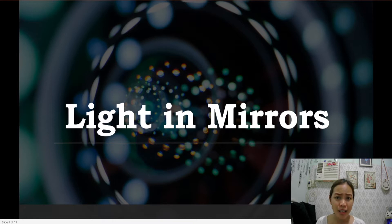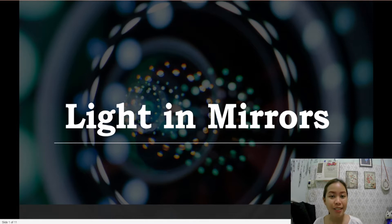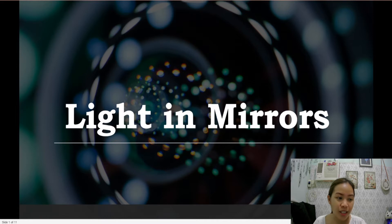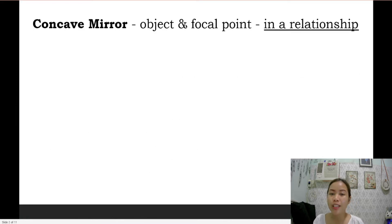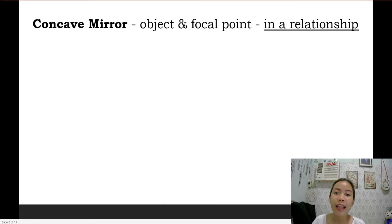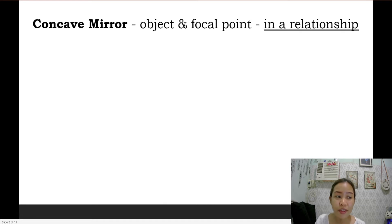So what are these spherical mirrors? These are the concave and the convex mirrors. So to start with, let us have first the concave mirror. The concave mirror allows the light rays to converge, meaning the light rays, the object and the focal point are in a relationship.